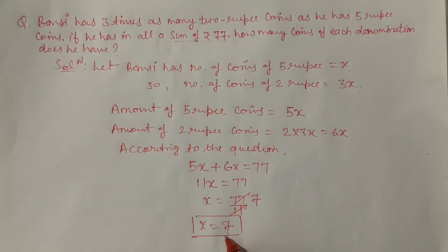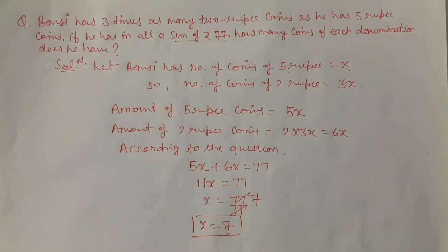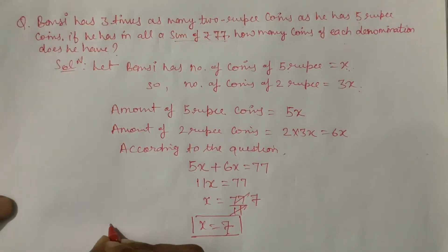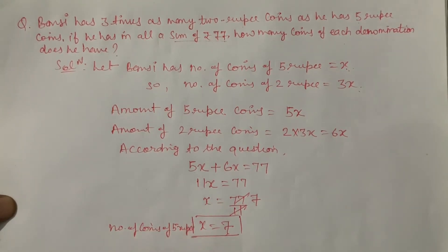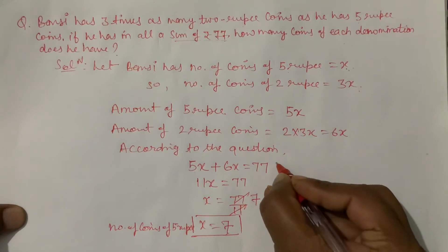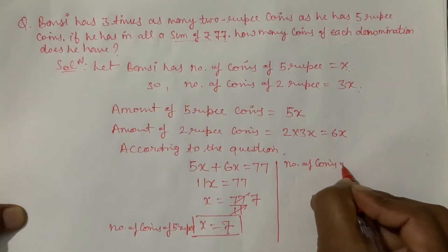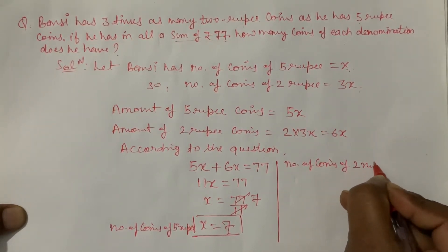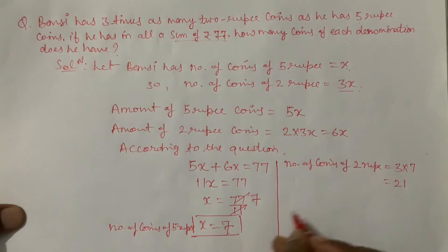Yani ki uske paas number of coins of 5 rupee = x = 7. Kyunki humne let kiya tha number of coins of 5 rupee = x, aur x = 7 aaya, toh 5 rupee ke coins 7 hain. Number of coins of 2 rupee = 3x = 3 into 7 = 21 coins. Aur 5 rupee ke coins 7 hain.